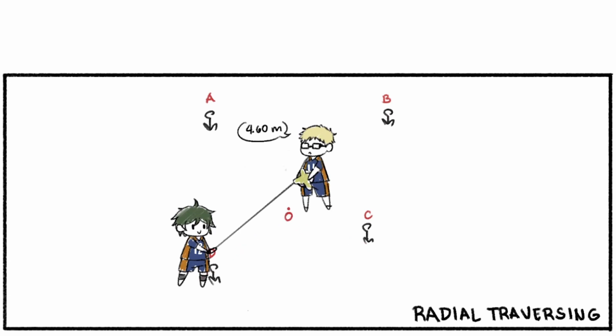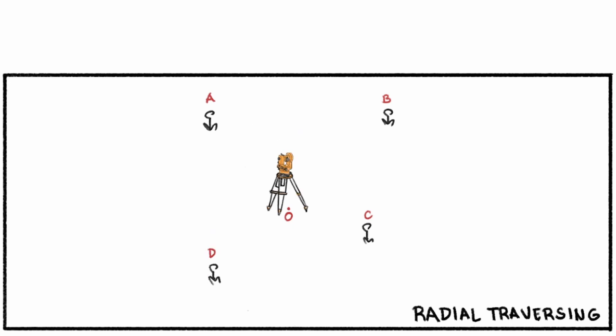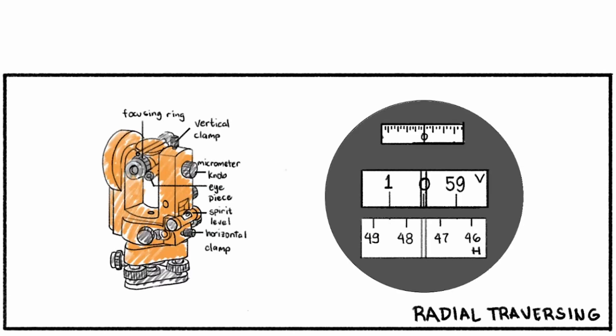Afterwards, set up the theodolite at point O. Make sure to level the bubbles of this instrument. Next, adjust the telescope of the theodolite until the vertical micrometer scale is at zero reading. Then tighten the vertical clamp to make sure the telescope is perfectly horizontal throughout the entire fieldwork.